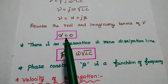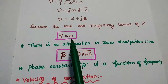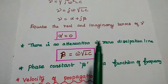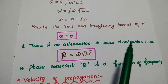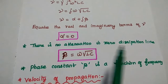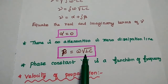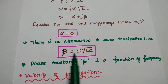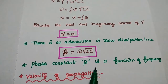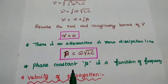The real term is zero, so alpha equals zero — there is no attenuation in the zero dissipation line. And beta equals omega into square root of LC. The phase constant beta is a function of frequency.